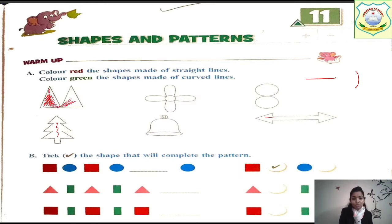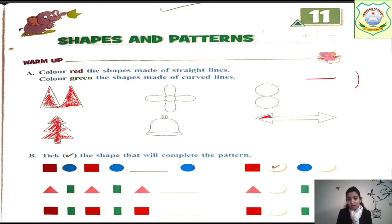Just color it properly, students. You need to color it with the red color. This will be red, and this will also be red. Let's do it fast, everybody. I am also doing so that you can do it with me. And then the last one — this arrow symbol — color it red as well. So color it properly, everyone.